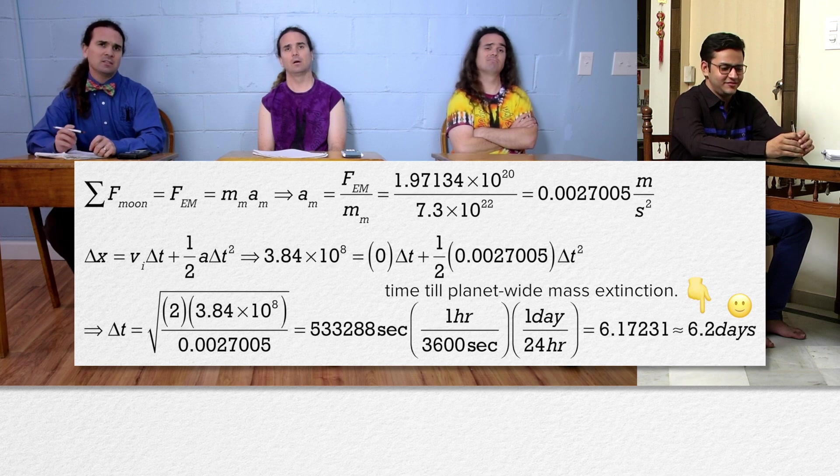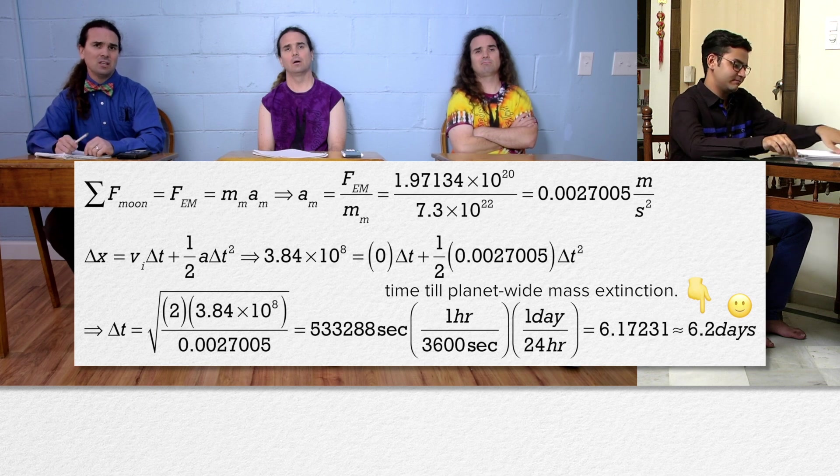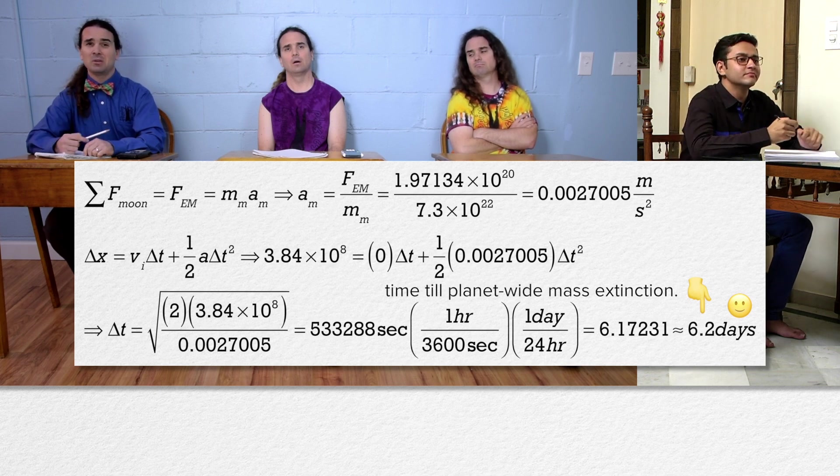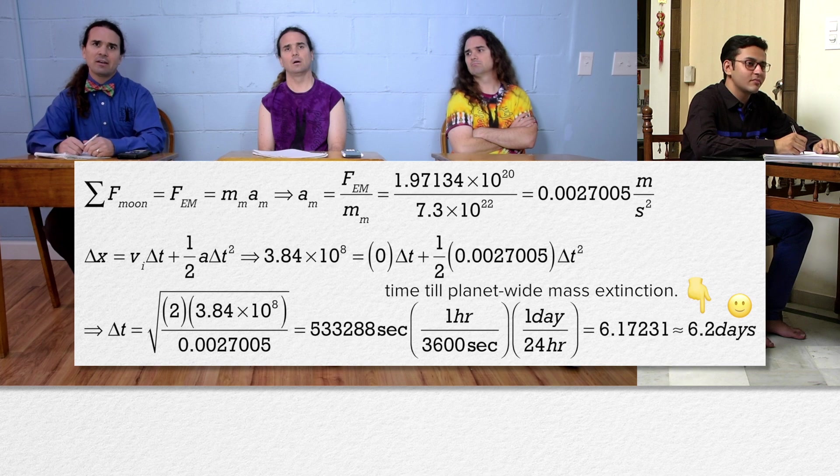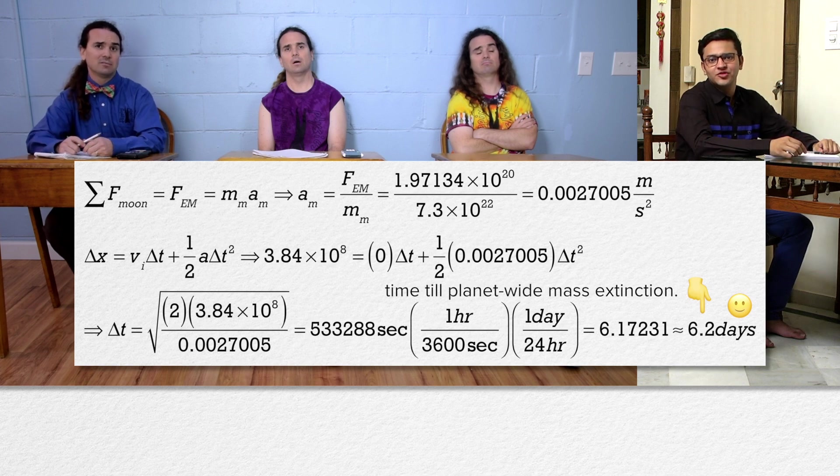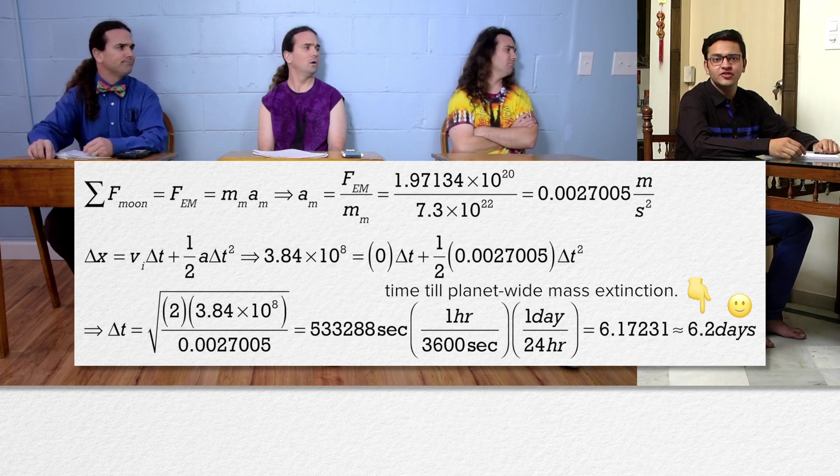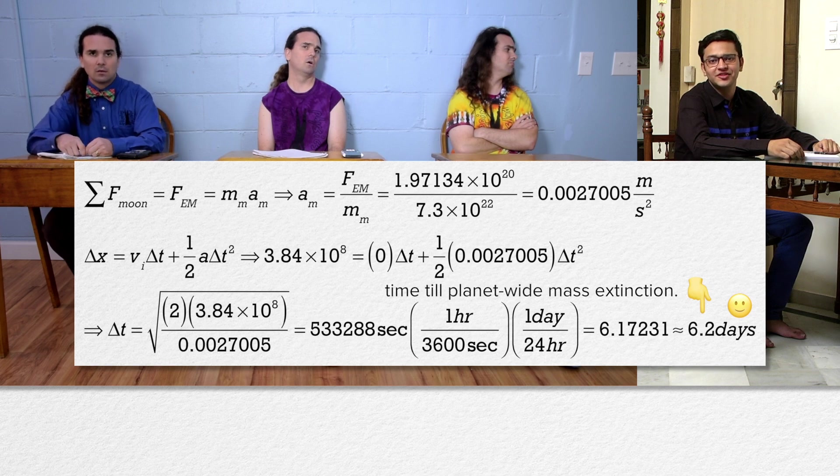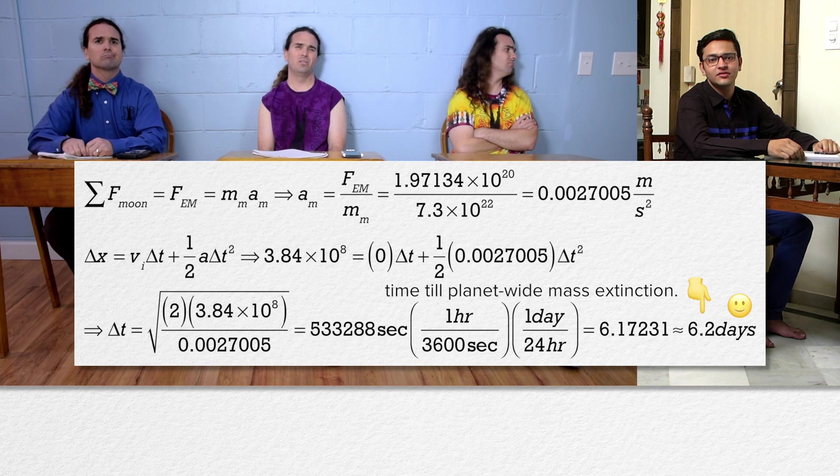Actually, as the Moon moves towards the Earth, the distance between the two will decrease, so the force of gravity will increase, so the acceleration is actually not uniform, so we cannot use the uniformly accelerated motion equations. That just makes it worse. We all die sooner because the acceleration increases as the Earth and the Moon get closer to one another.